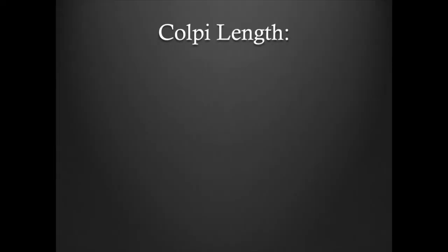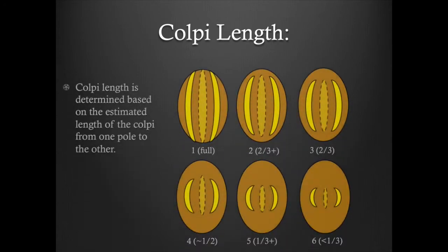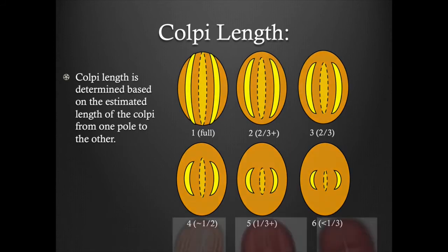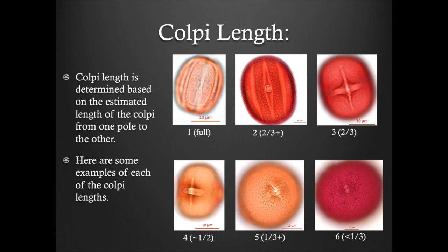Colpi length. Colpi length is determined based on a visual estimation of the length of the colpi from one pole to the other. The length may vary from anywhere from less than one third of the grain's height to the full length of the grain's height. Here are some examples of colpi length.